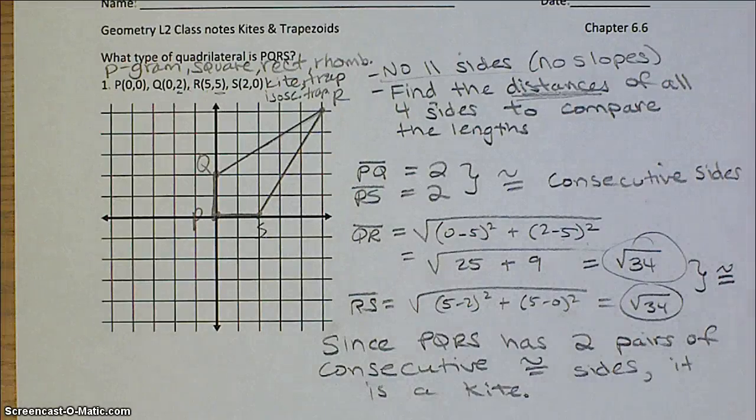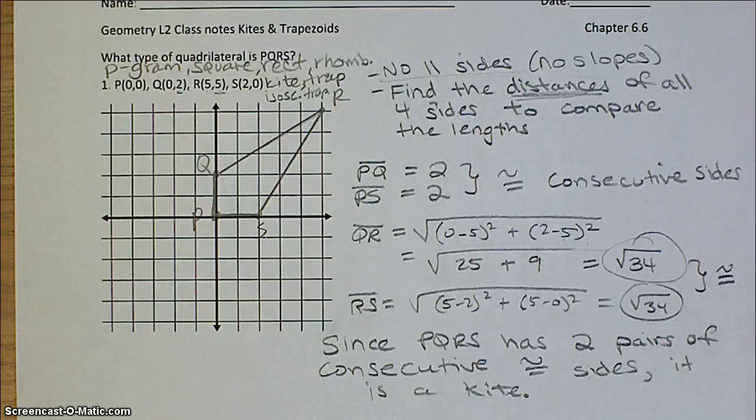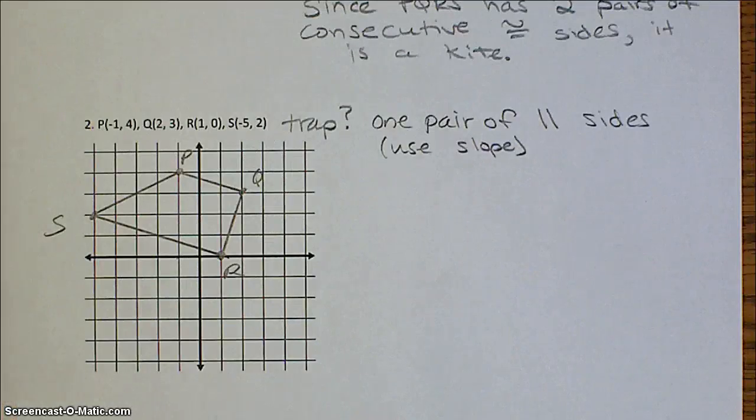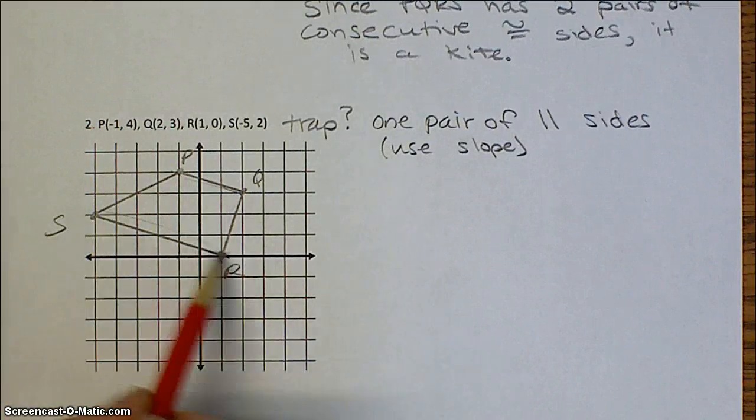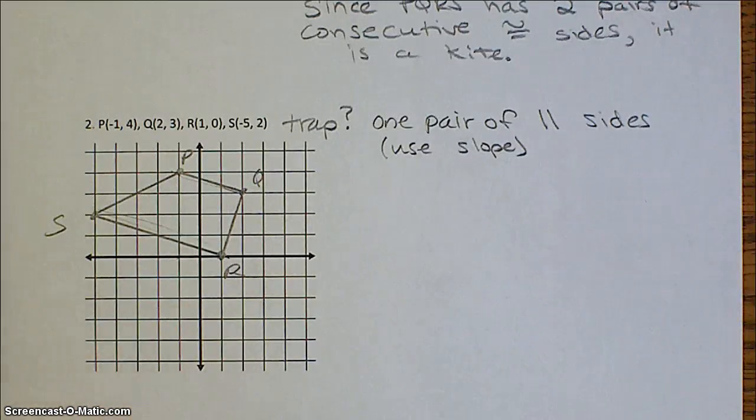Go ahead and graph your points for number 2, and then try to get an idea of what shape you think we're dealing with. Just by looking at this picture, we can kind of tell that this looks like a trapezoid, and it looks like PQ and SR are parallel, but we're not really sure.